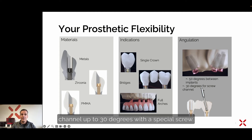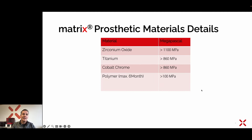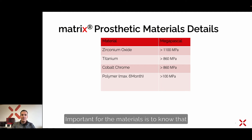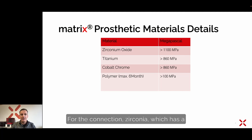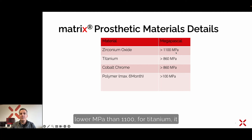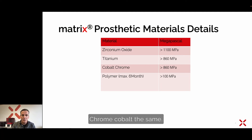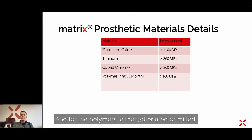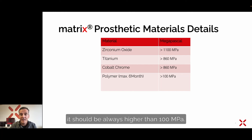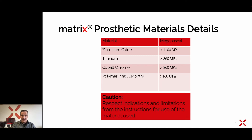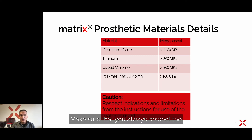You are able to correct the screw channel up to 30 degrees with a special screw. Important for the materials: you should never use zirconia in the matrix connection with lower than 1100 megapascals, for titanium never lower than 860 megapascals, chrome cobalt the same, and for polymers — either 3D printed or milled — always higher than 100 megapascals. Always respect the indications and limitations from the instruction for use of the material.